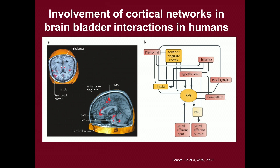When we look at what we call the pontine micturition center — PMC — we can see it leads to sacral efferent output and drives the voiding reflex, but it is highly associated with and controlled by up and down mechanisms to the thalamus, to the insula, to the periaqueductal gray, or PAG — centers that deal with emotion, stress, and other mechanisms. And sacral efferent input can also impact these centers.